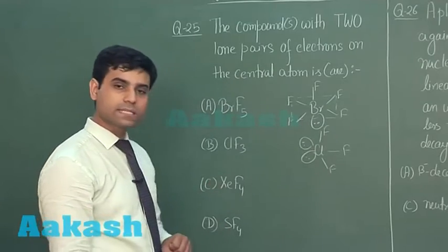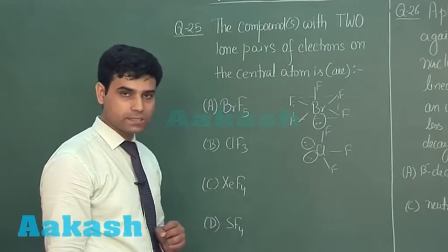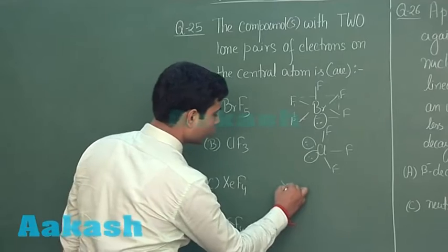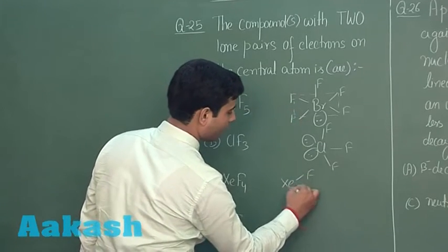In case of XeF4, we have square planar structure with two lone pairs on xenon.